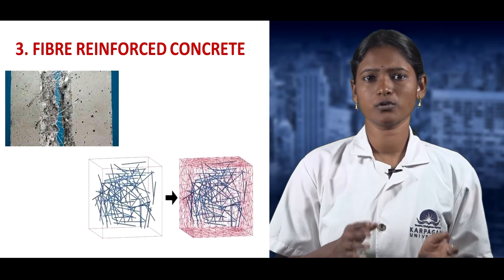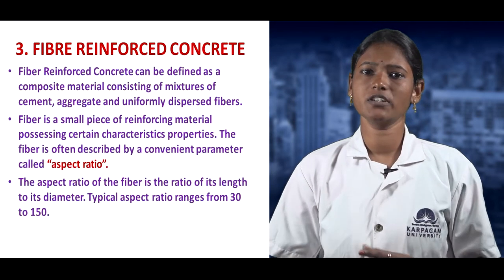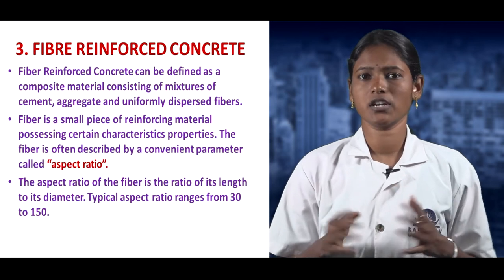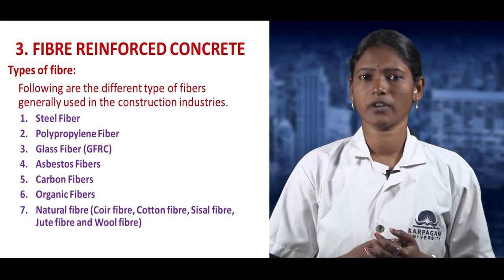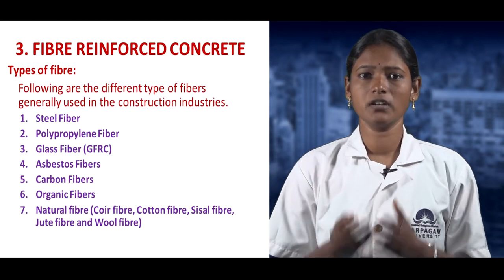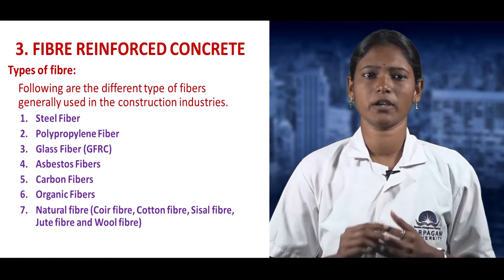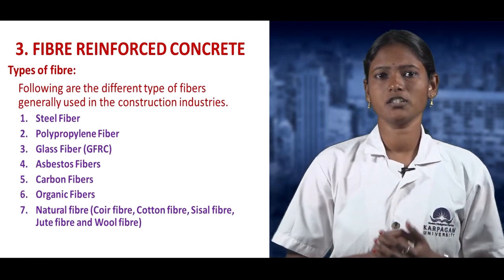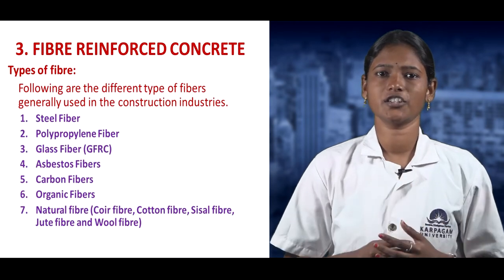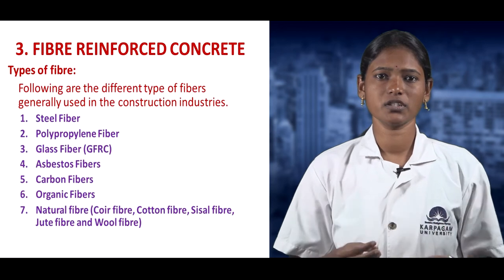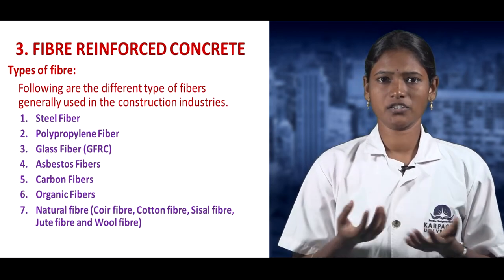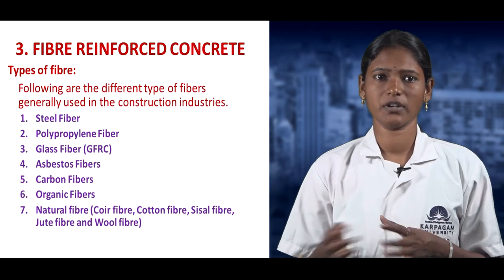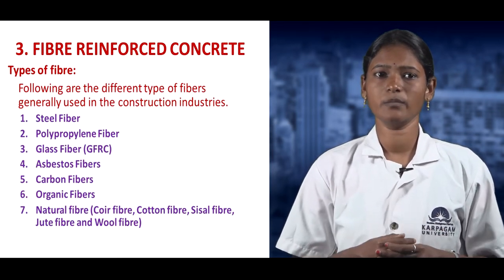Fiber reinforced concrete consists of cement, aggregate, and uniformly dispersed fibers. Fibers are defined in terms of aspect ratio, which is the length to diameter ratio, ranging from 30 to 150. Types of fibers used include steel, carbon, glass, polypropylene, asbestos, organic, and natural fibers like coir, sisal, jute, and wood. Fiber reinforced concrete increases tensile strength, reduces air and water voids, increases durability, provides good resistance to creep, avoids differential shrinkage, reduces deformation, and improves dynamic characteristics.